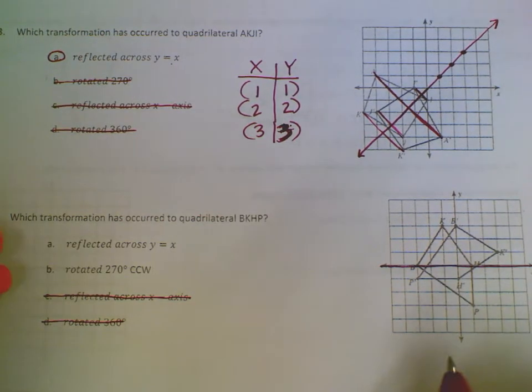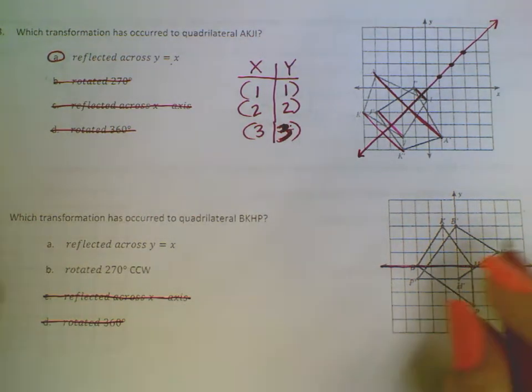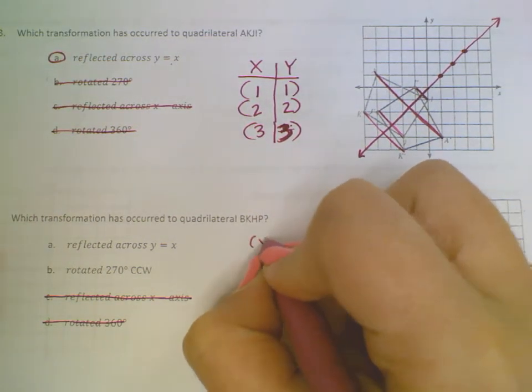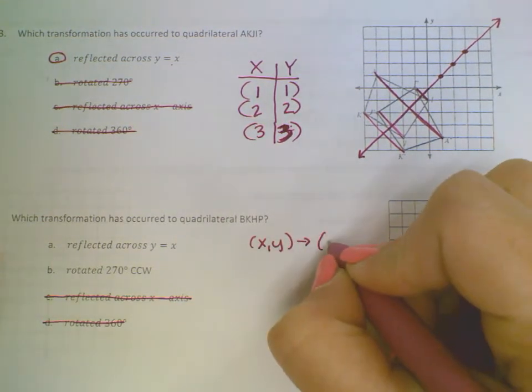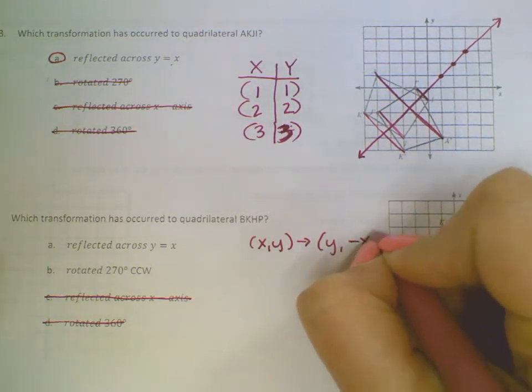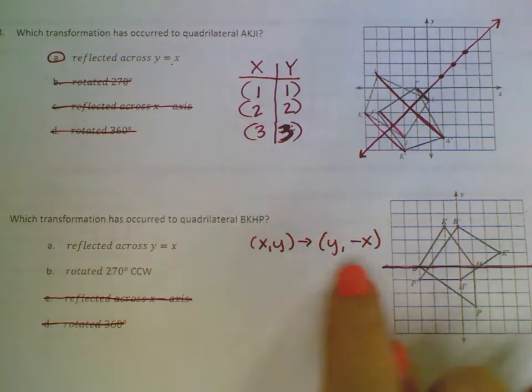So now reflecting across the line y equals x or rotating 270 degrees. If you know the rule for rotation, x, y, 270 degrees, find the opposite of x, switch the x and the y. So if you know that, then you can plug in some points and see if this holds true.